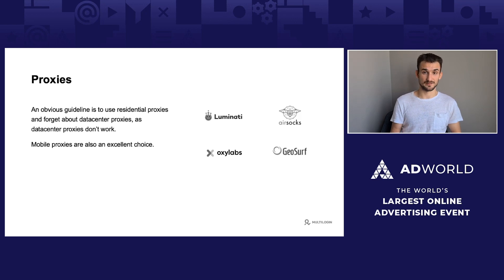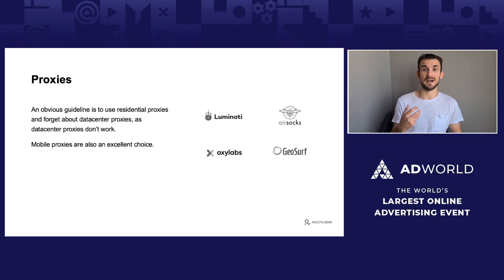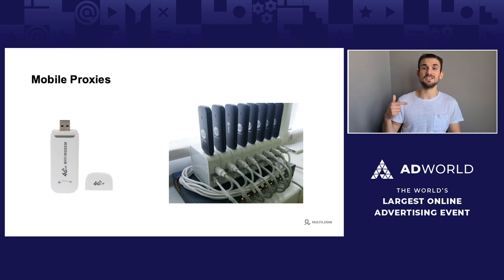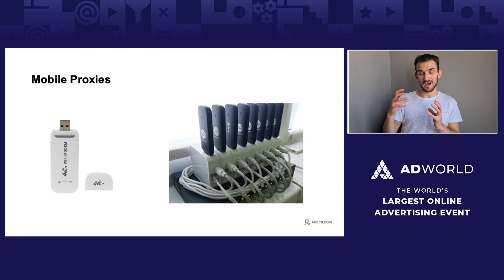Mobile proxies are also an excellent solution. They are relatively easier to obtain than residential proxies, they are also cheaper, and they provide almost the same high quality as residential IP addresses. If you don't want to spend a lot of money on proxies, you can simply use a modem dongle and switch and change your internet connection after each time you log into your advertising account. Some people go to extremes and set up hubs of different mobile sticks, as you can see in this picture.